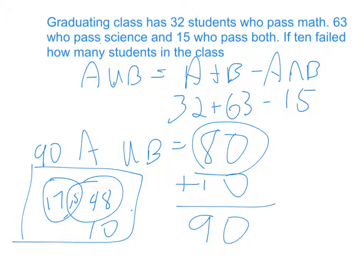Now there's some questions for you to try, and they follow this formula. You might have to find A union B, A or B, or A intersection B, but it's really going to utilize this formula.